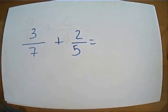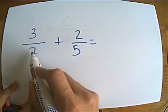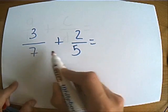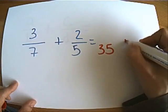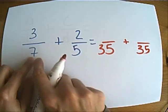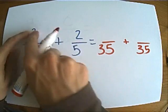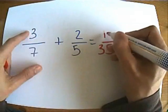Some of you may have been shown a nice quick method for doing this, whereby you first of all multiply the two denominators together. So 7 times 5 gives me 35. And then you think to yourself, well, I've multiplied this number by 5, so I've got to multiply this numerator by 5 as well. 3 times 5 is 15.